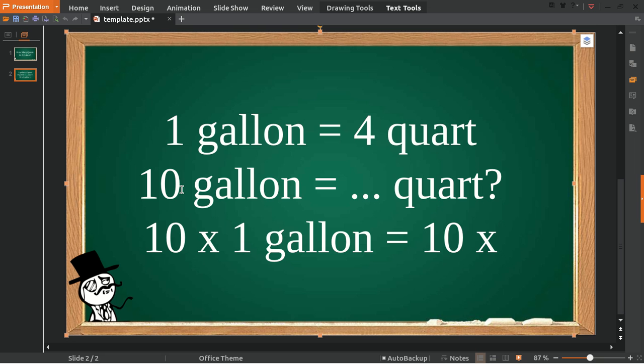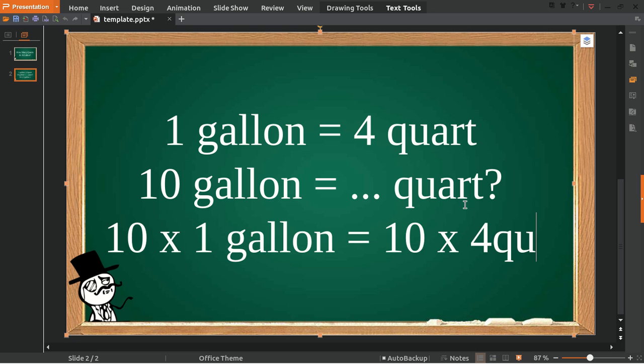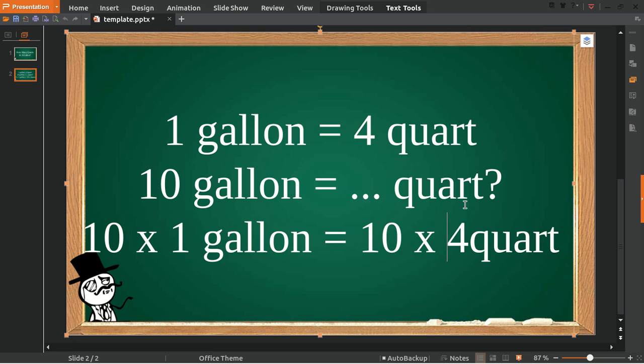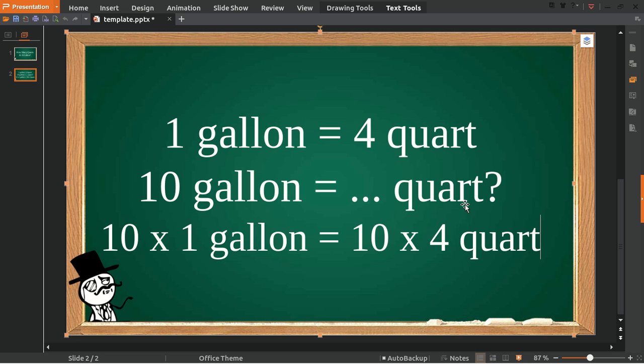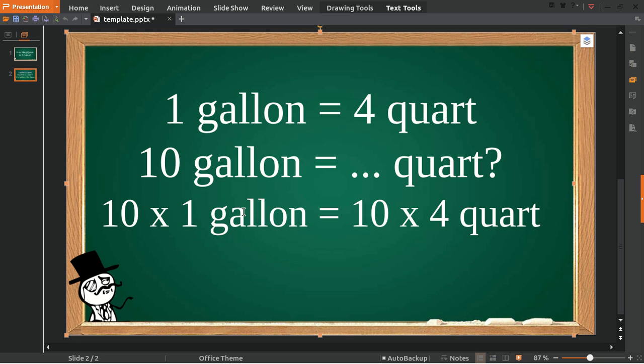Okay, 10 multiplied with 4 quarts. Five, one, four quarts. Okay, you need to understand—we write 1 gallon on the left, okay, because we take it from here.